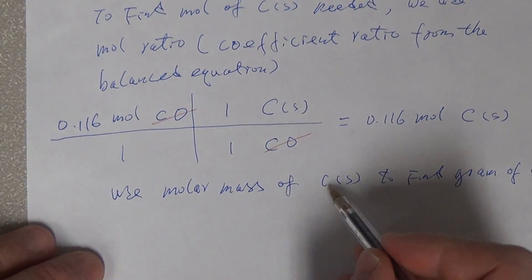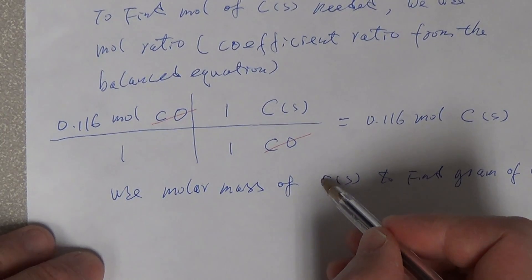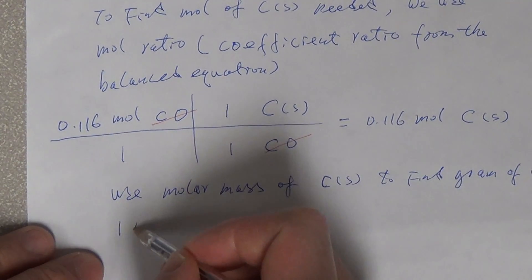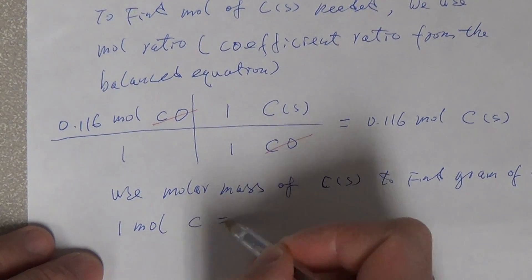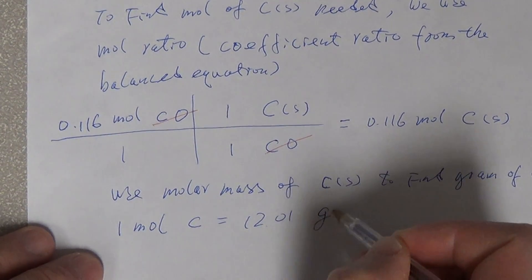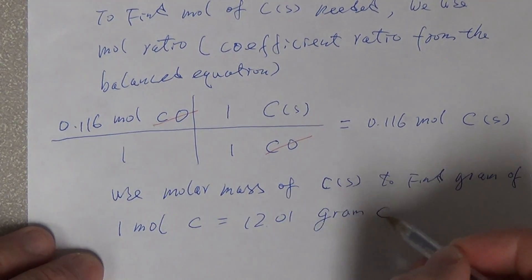So molar mass of C solid means just carbon, pure carbon element. So then we know from the periodic table, one mole C equals 12.01 grams of C.